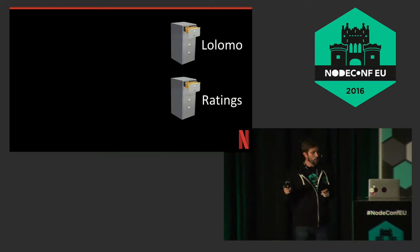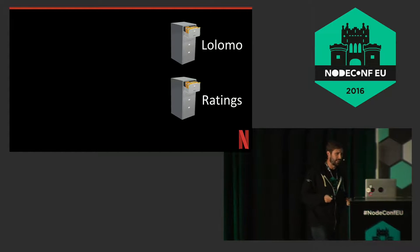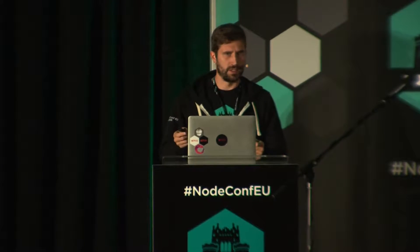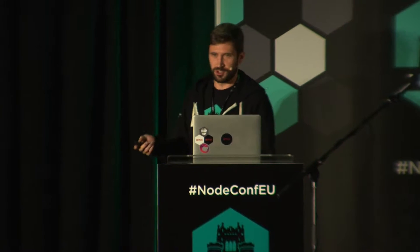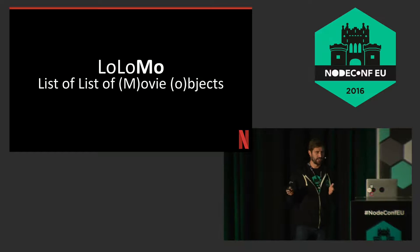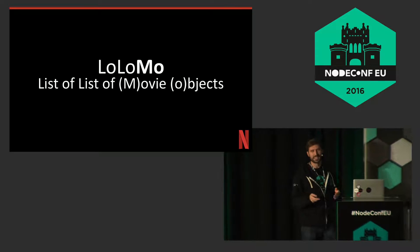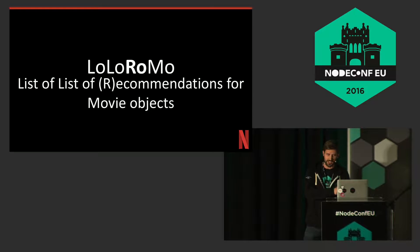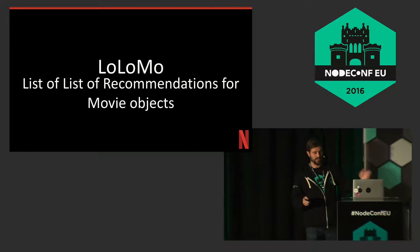Essentially how it works is I have two microservices: a lolomo service and a rating service. Everyone familiar with lolomos? No? Good, because you shouldn't be — it's a Netflixism. A lolomo is a list of list of movie objects. That's how we say it internally. Technically it's a list of list of recommendations for movie objects, but nobody says that. So we just say lolomo.